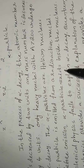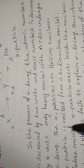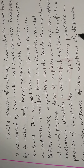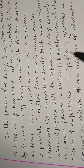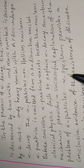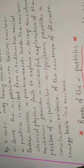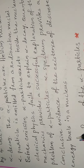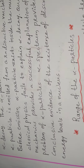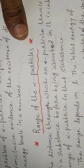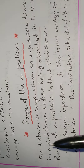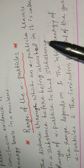Before emission, alpha particles exist inside the nucleus. Classical physics fails to explain alpha decay, but quantum mechanics successfully explains it. The alpha spectrum explains the existence of discrete energy levels in a nucleus.